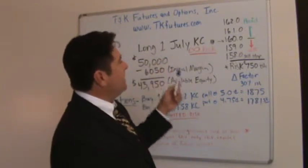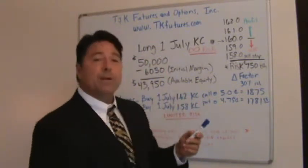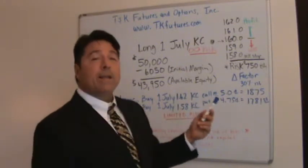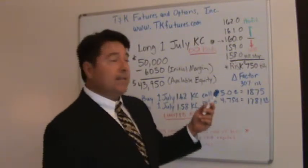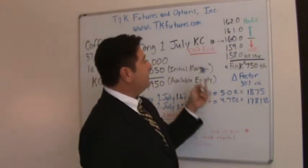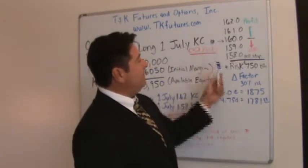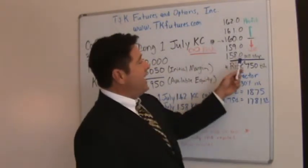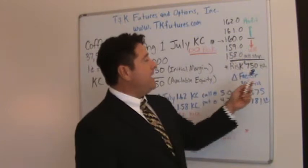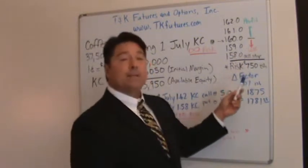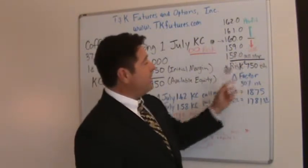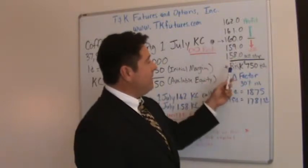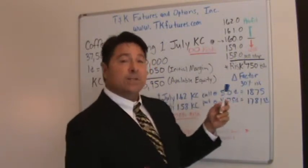This leads me to the next question I always get: how do you manage this unlimited risk? Well, if you're long the market and you don't want the market coming down, you can put a sell stop in there to limit your risk. In this case I put 750-ish, so you're going to limit your risk to about $750.